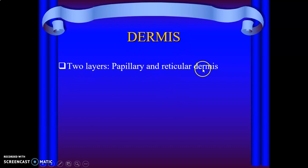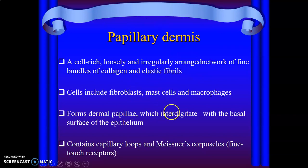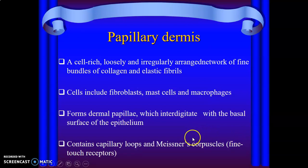The dermis is made up of two layers: papillary dermis and reticular dermis. The papillary dermis interdigitates with the stratum germinativum of the epidermis and has loosely and irregularly arranged collagen and elastic fibers. Cells in the dermis include mast cells, fibroblasts, and macrophages — distinct from the epidermis cells. The dermal papillae interdigitate with the epidermal ridges. The papillary dermis also contains capillary loops and Meissner's corpuscles, which are receptors for fine touch.